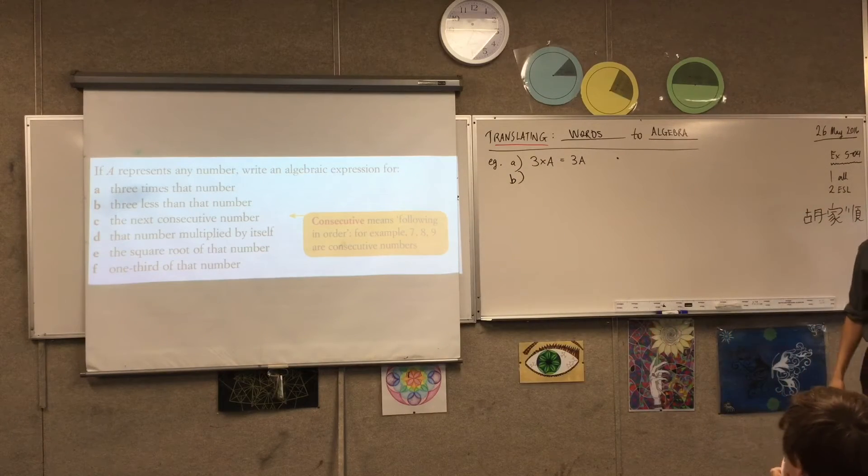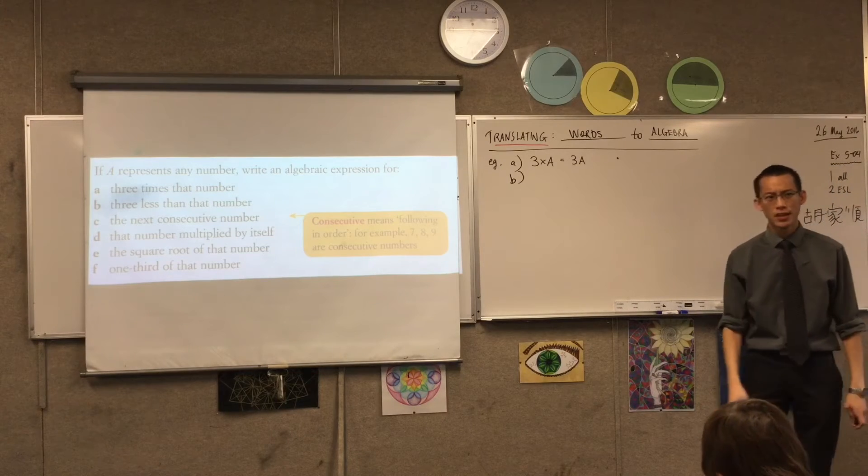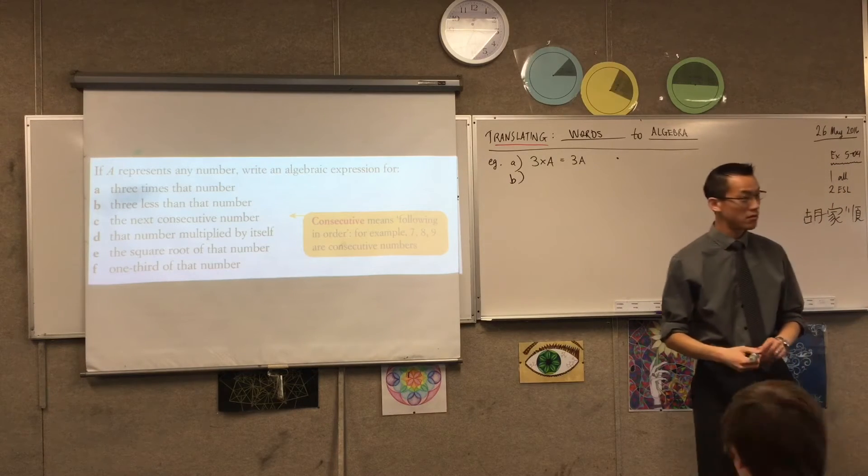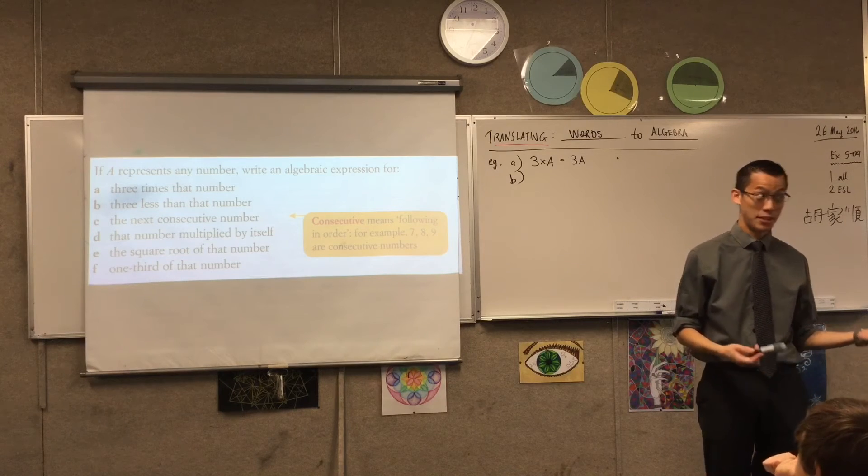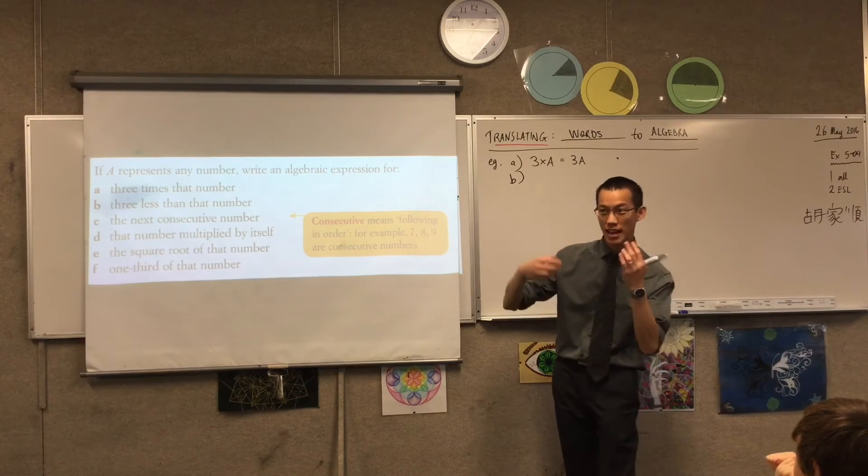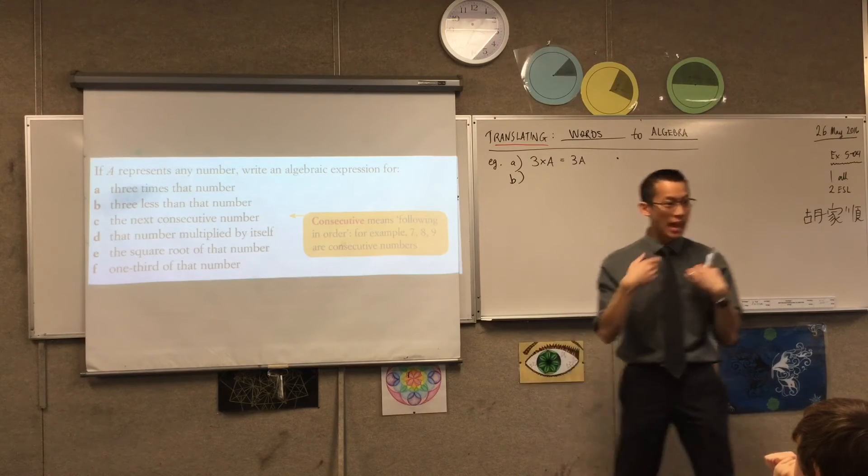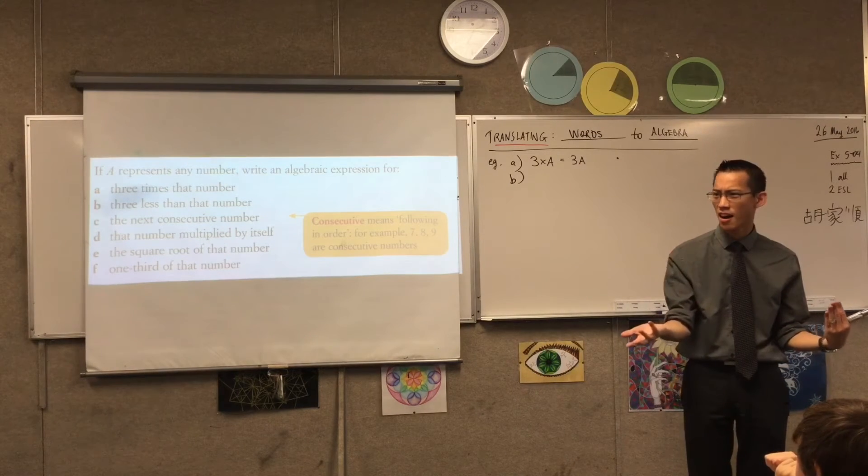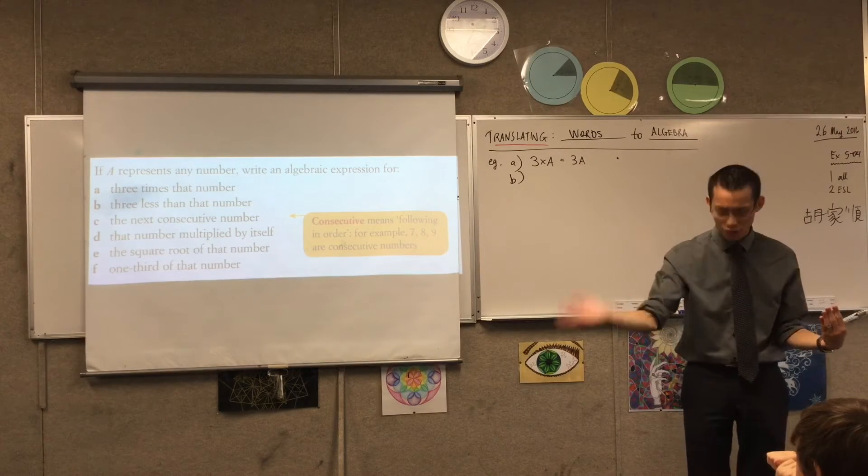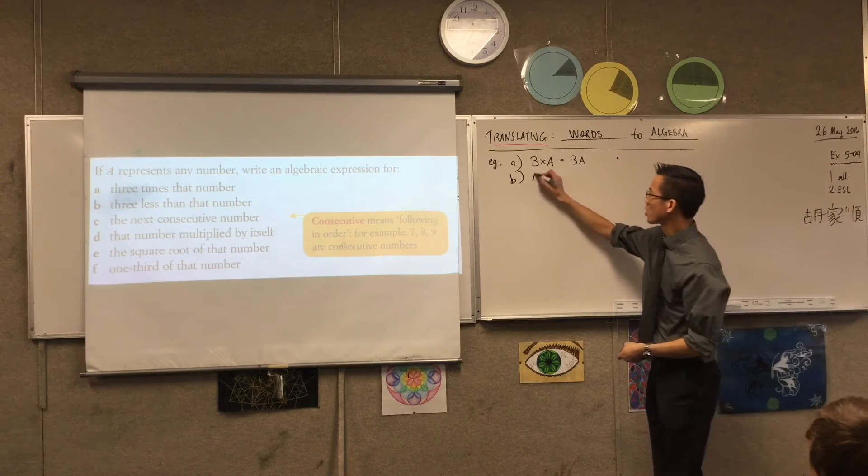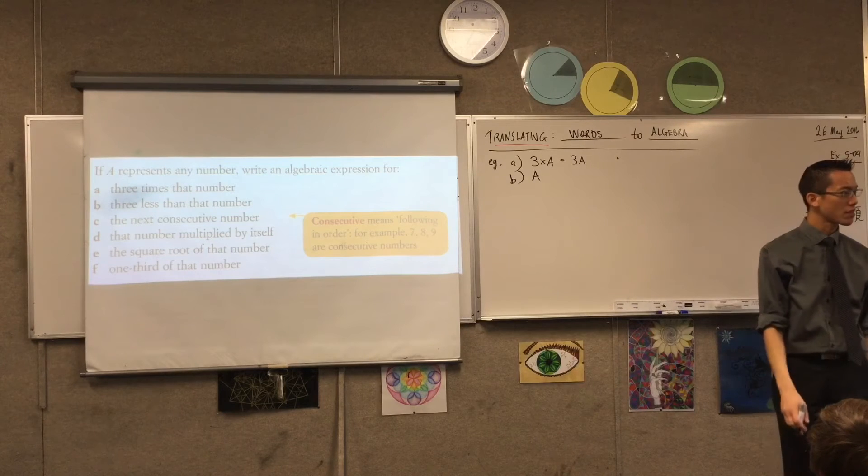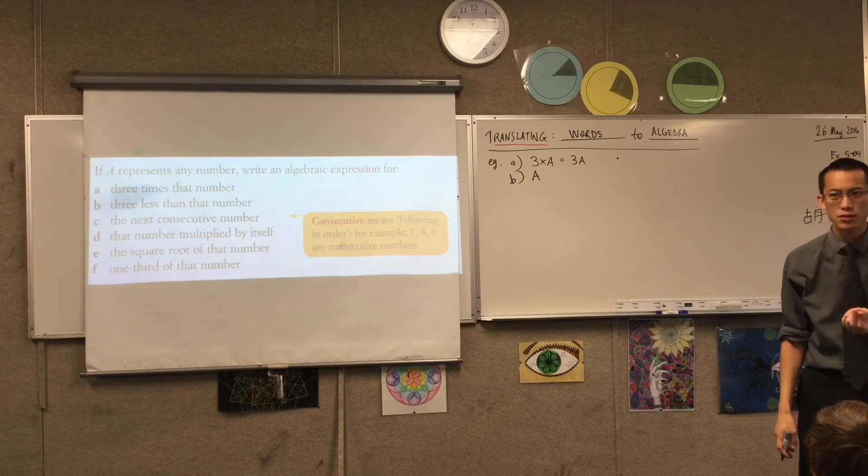Three less than that number. Huh. So if my number was, say, ten, what would be three less than that number? Seven. If my number were like, say, 105, what would be three less than that number? 102. 102. Okay, so you're always starting from that number. You're starting from that number. But you're, what operation am I doing here?